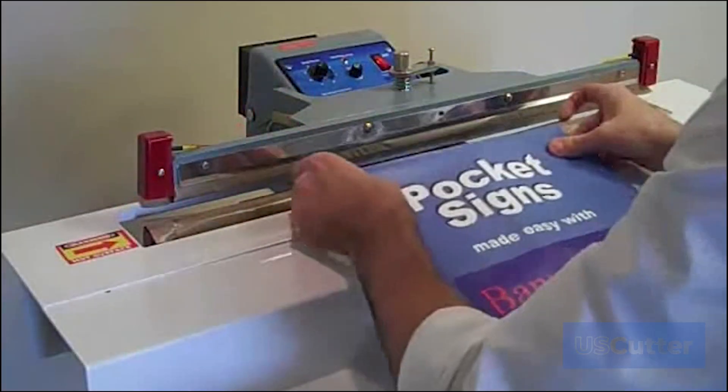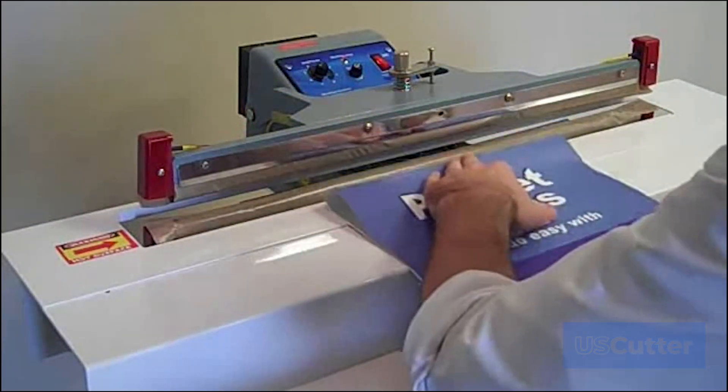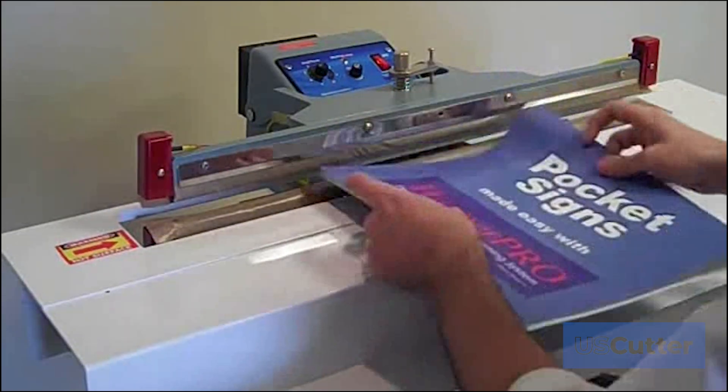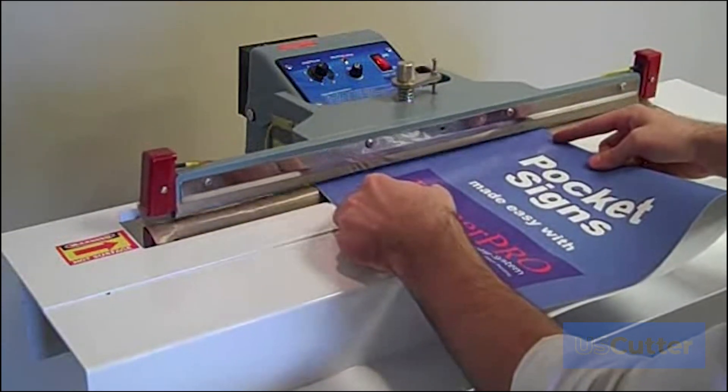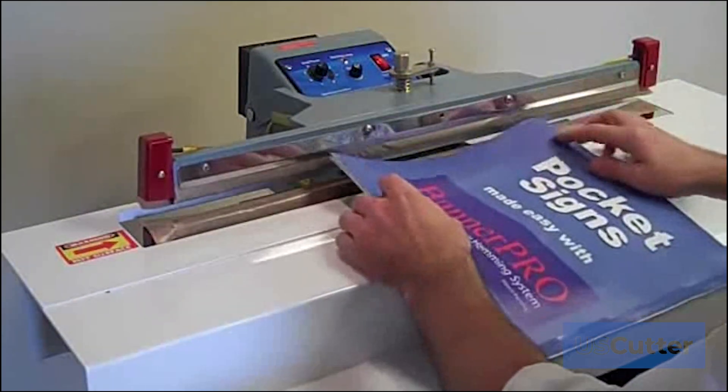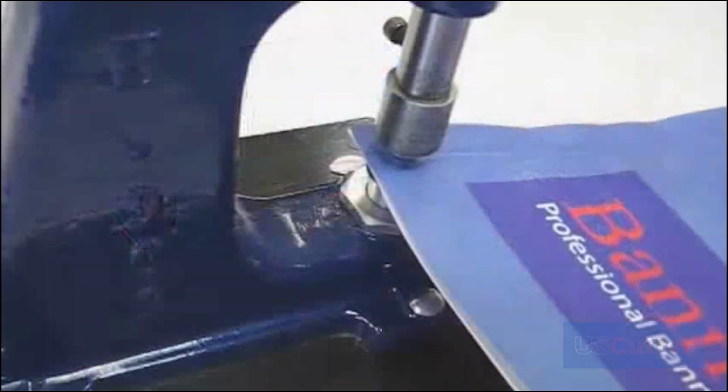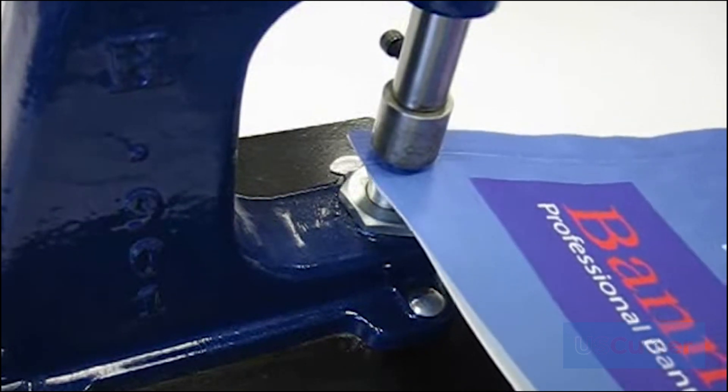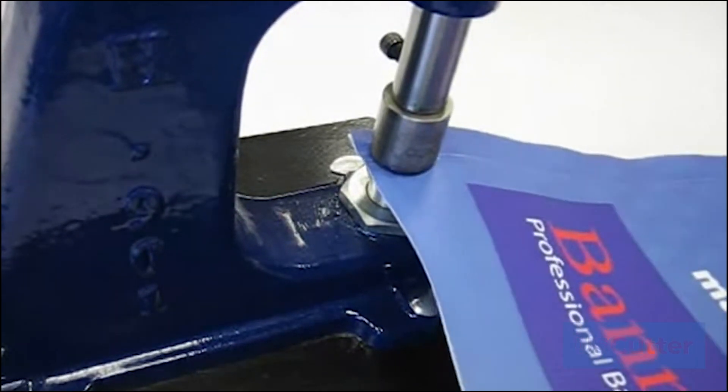Pocket signs are a breeze with Banner Pro. To start, fold the banner in half so that you have two printed sides facing out, with the crease along the top edge. Align each half of the banner to each other and weld both the left and right sides. Always place the grommet on the leading end of the weld for added strength and durability.